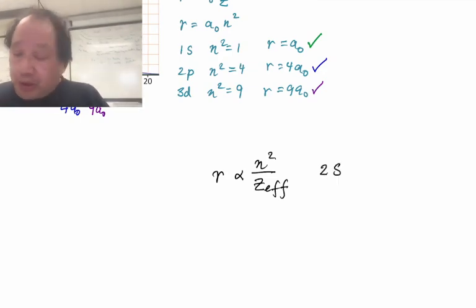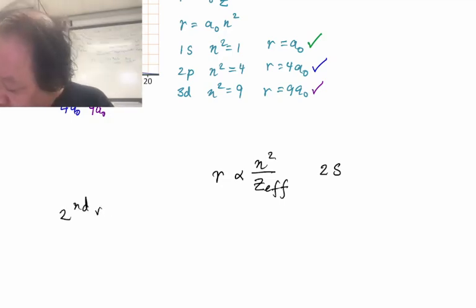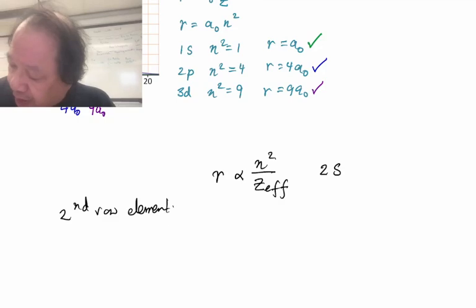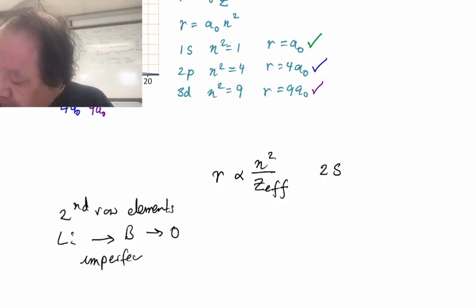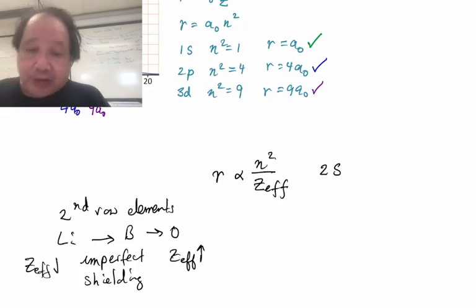So we're going to compare second row elements. We'll look at lithium further on the left and boron and then oxygen. And we know as we go to the right, due to imperfect shielding, we know that z effective will be greatest here and z effective will be smallest on this side.